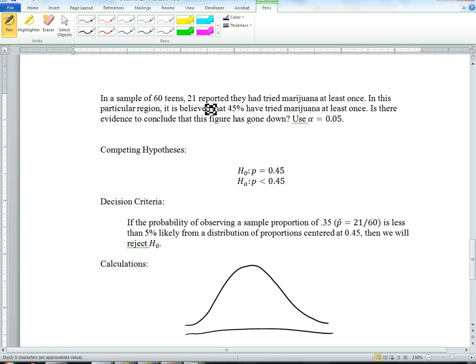In a sample of 60 teens, 21 reported they had tried marijuana at least once. In this particular region, it is believed that 45% have tried marijuana at least once. Is there evidence to conclude that this figure has gone down? Use alpha equals 0.05.